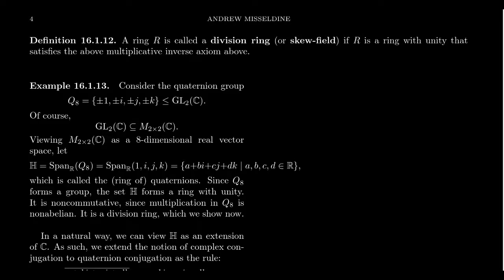To have multiplicative inverses, you do have to have a multiplicative identity, so unity is required — you need a ring with unity. But you don't need commutivity. So if you have a ring with unity that satisfies the multiplicative inverse axiom, where every element except for zero has an inverse, we call this a division ring or a skew field. The prefix 'skew' often suggests non-commutivity.